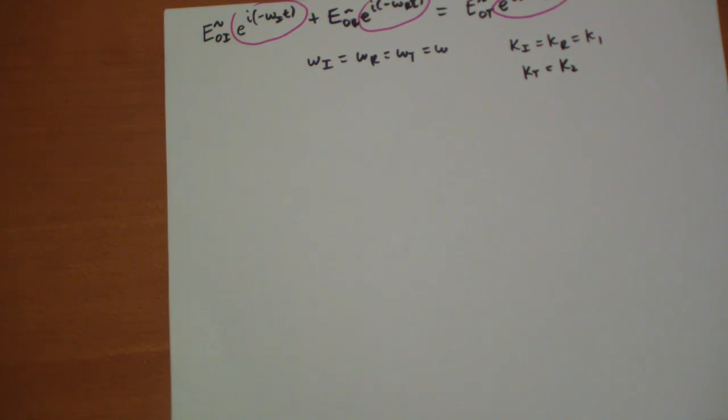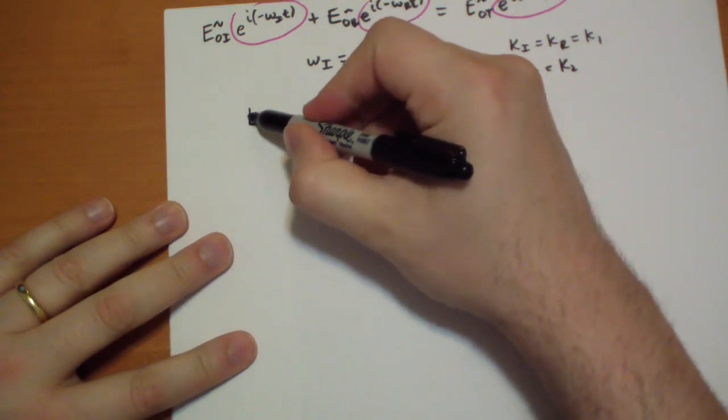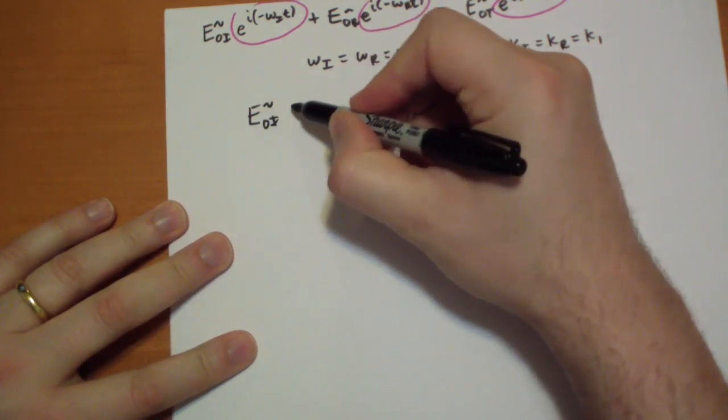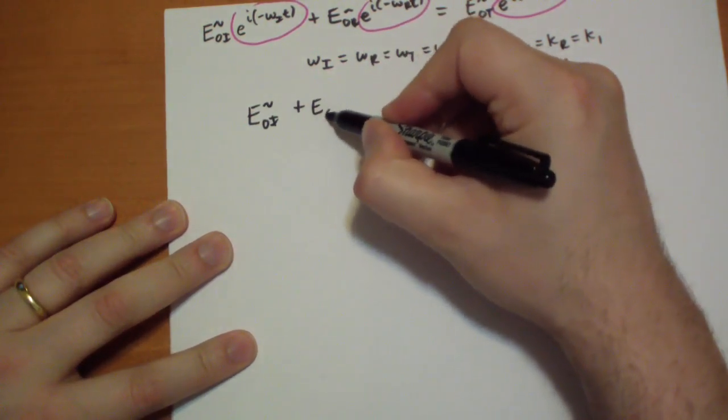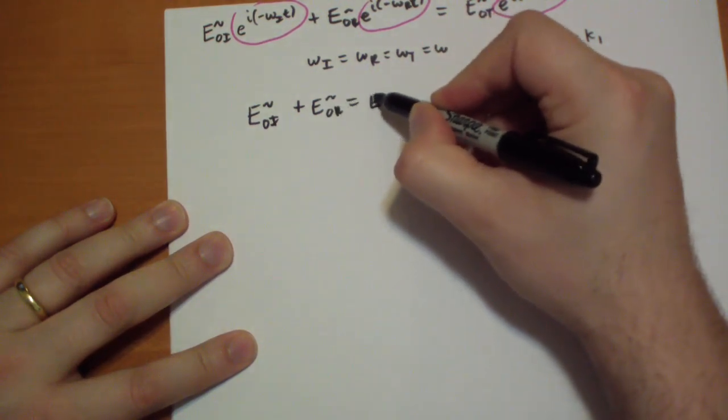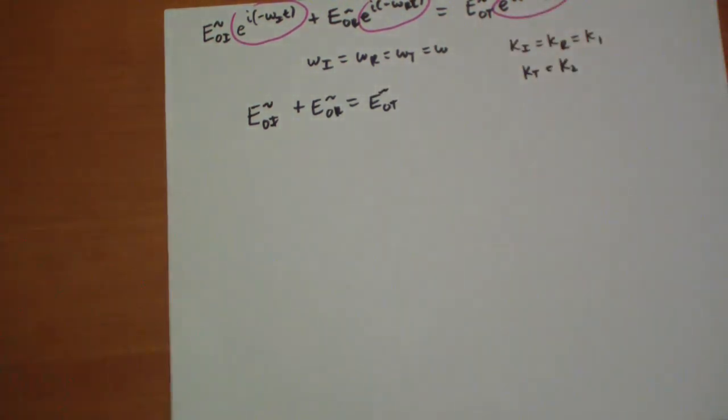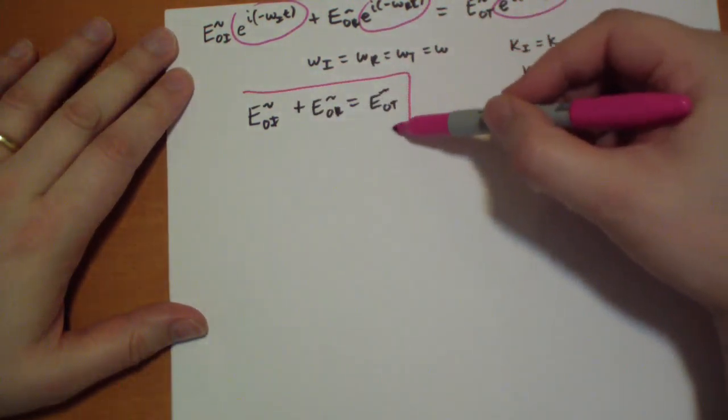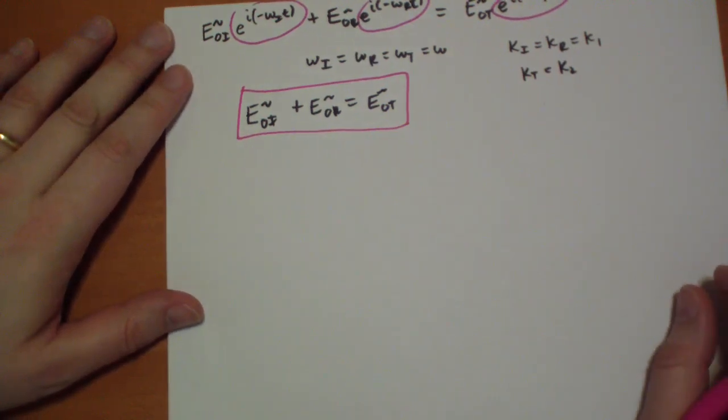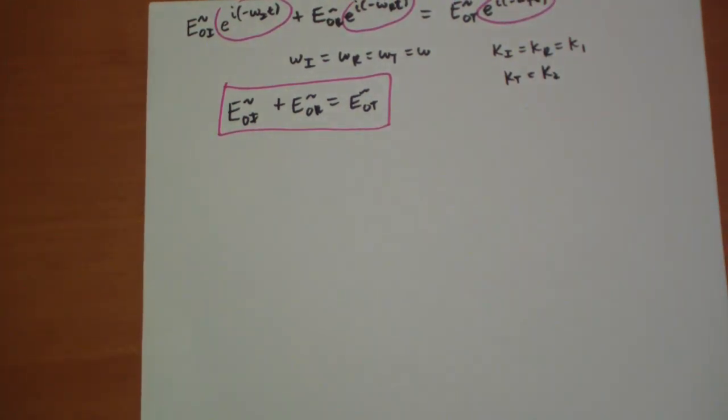The second thing is, once we've got those equal, then we're left with these three terms. And it says that the E naught i complex plus the E naught r complex has to equal the E naught t complex. That's going to be an important component to the equation that allows us to solve how they all relate to each other.